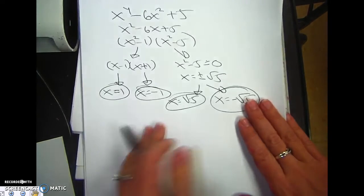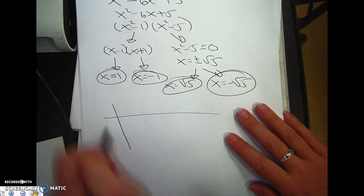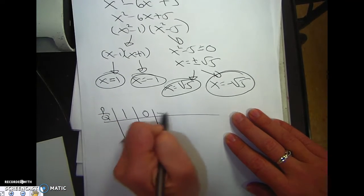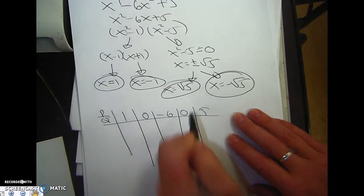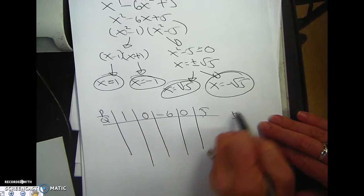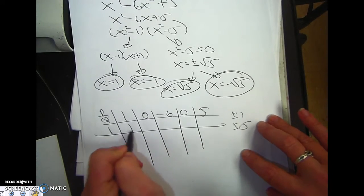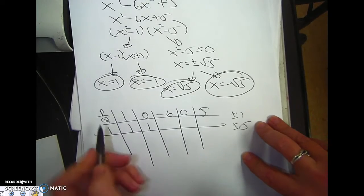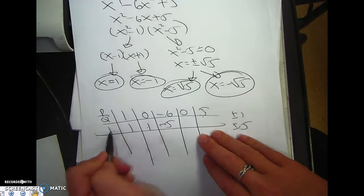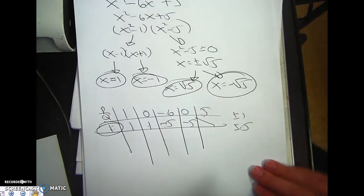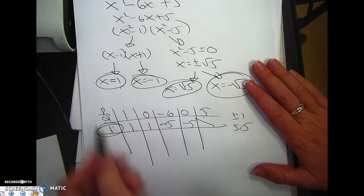So for this one, I could do the pq. Let me just show that really quick. 1, 0, negative 6, 0, 5. My possibilities, plus or minus 1, plus or minus 5. So I try 1. Bring down the 1. 1 times 1 is 1, plus 0 is 1. 1 times 1 is 1, minus 6 is negative 5. 1 times negative 5 plus 0. Boom. That works. There's one of my roots, it matches up there.